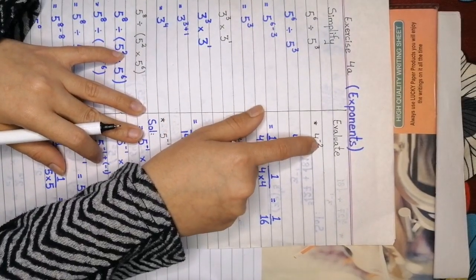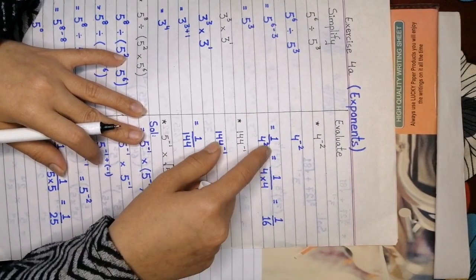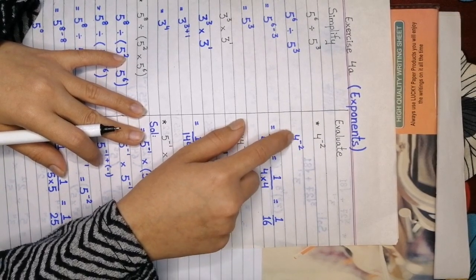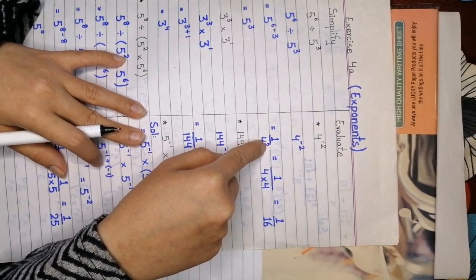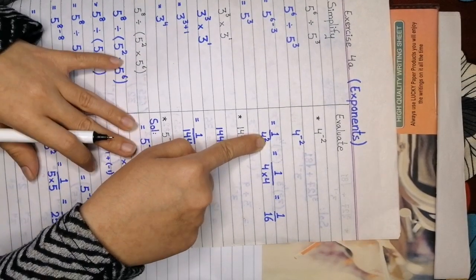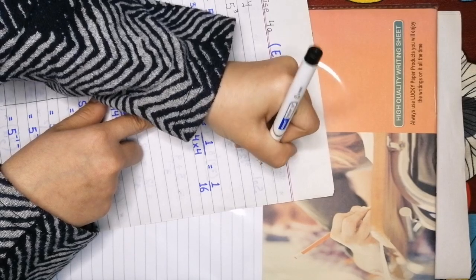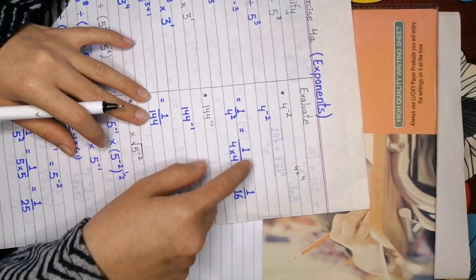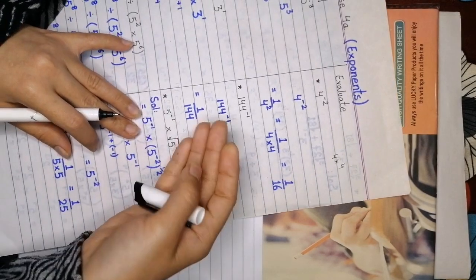Now look here — what we have is a negative exponent. How do we solve this? First we have to make it positive by changing its position. It is at the numerator place; when we move it to the denominator place, we get a positive sign. Now, 1 over 4 raised to power 2 means we multiply 4 two times. 1 over 4 multiply by 4 gives us 1 over 16.